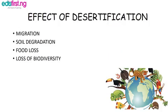Effects of desertification. Number one, migration. We have soil degradation. We have food loss and also loss of biodiversity. In a situation whereby a particular region has a large amount of biodiversity, be it plants or animals, and they are exposed, automatically some of them will leave that particular environment or die. That is why we have a loss of biodiversity.